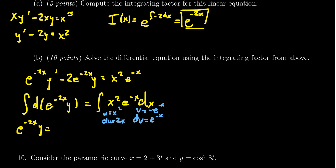Plugging into the integration by parts formula, we get negative one-half x squared e to the negative 2x. Note: I initially wrote negative x but it should be negative 2x throughout, so there's a factor of one-half that appears from the antiderivative. That was an important correction to notice.